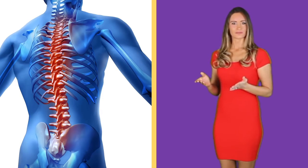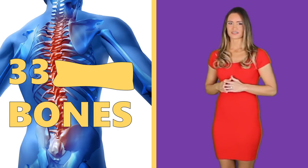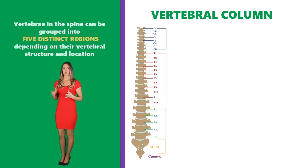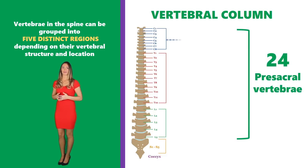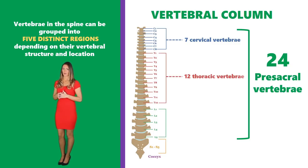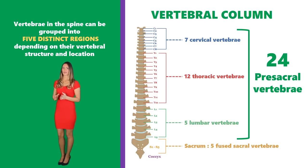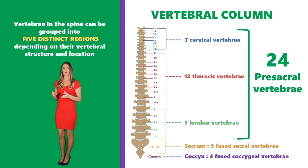The human vertebral column is made up of 33 bones, or vertebrae. The vertebrae in the spine can be grouped into five distinct regions depending on their vertebral structure and location. The spine is composed of 24 presacral vertebrae — which includes seven cervical vertebrae, 12 thoracic vertebrae, and five lumbar vertebrae — the sacrum, composed of five fused sacral vertebrae, and the coccyx, made up of four fused coccygeal vertebrae.